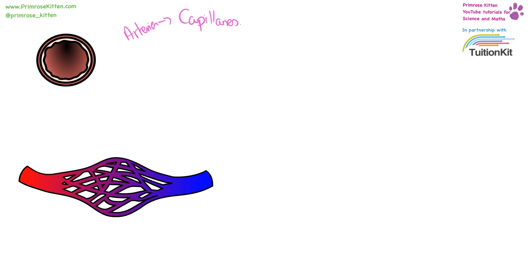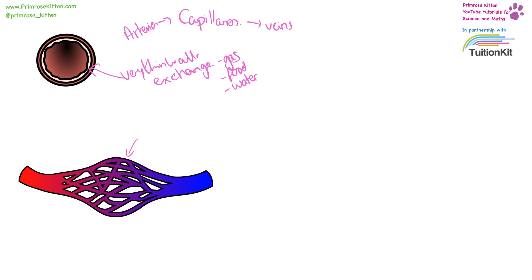Capillaries sit in the middle of arteries and veins. They have very thin walls. This is to allow for the exchange of gases, liquids, and nutrients, so that every cell is really close to them. They supply cells with food, oxygen, and water.